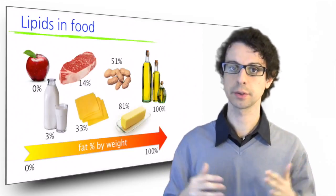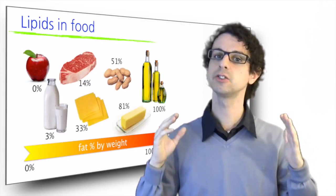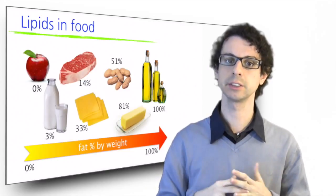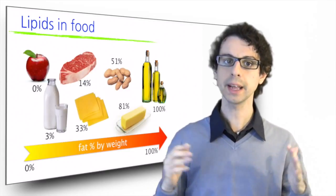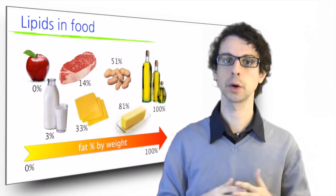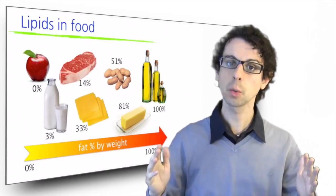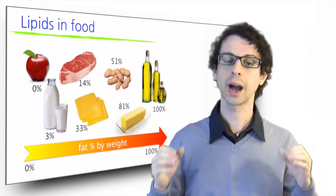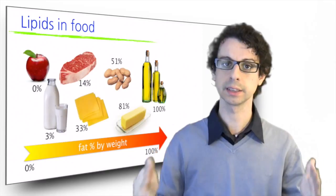Cheddar cheese, 33%; peanuts, 51%, and in general all nuts and seeds are pretty rich sources of fat. Butter, 81%, and the rest is water. And then oil. There's no water at all in oil, so 100% of what's in it is lipids, they are pure sources of fat.